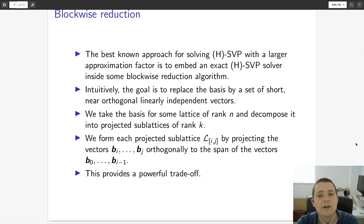When attempting to solve HSVP, typically what one does is replace the exact problem with an approximation. The typical way to do this is to embed an exact HSVP solver inside some blockwise reduction algorithm. The intuition is you're replacing the basis by a set of short, nearly orthogonal, linearly independent vectors. You're trying to balance out the contribution of the lengths across all vectors in your basis. In particular, we take the basis for some lattice of rank n and decompose it into projected sublattices of rank k. We project the vectors in the basis from bi up to bj orthogonally to the span of the previous vectors.